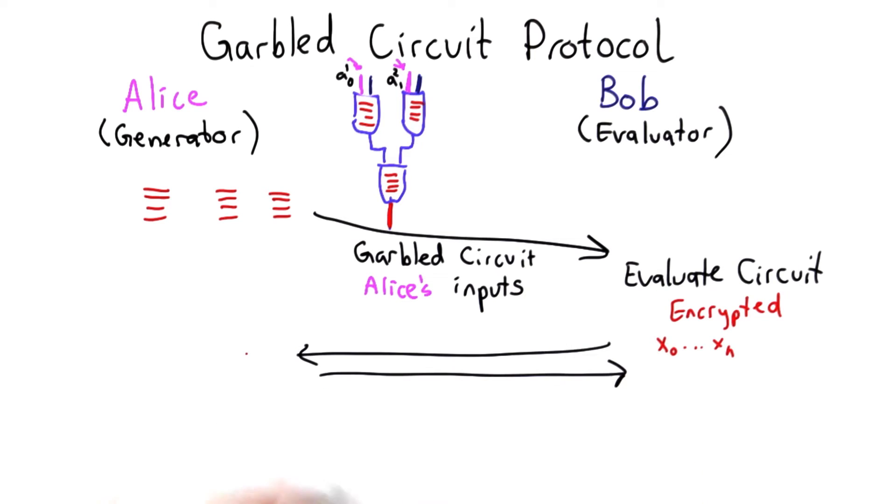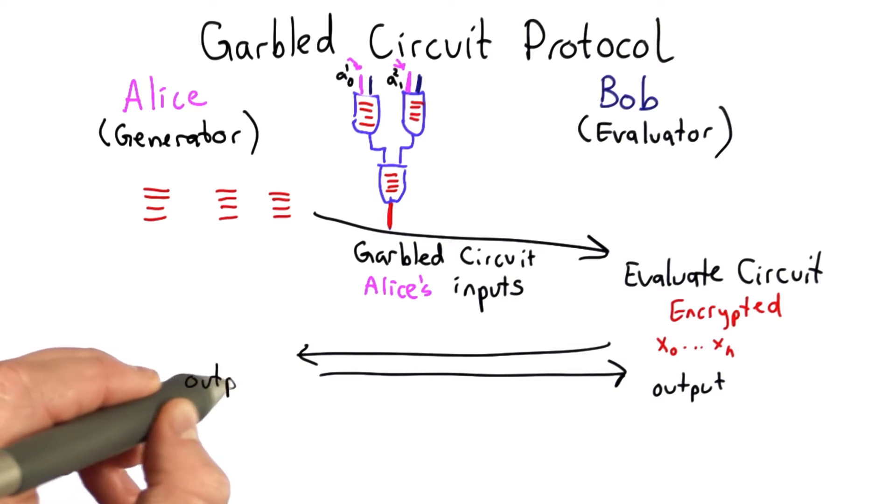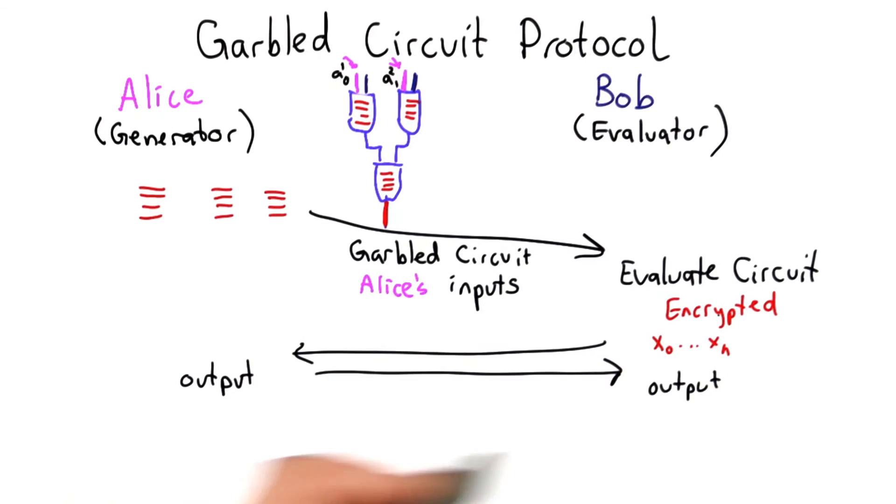And then they're going to do something to turn that into the semantic value, which possibly Bob receives, possibly Alice receives. We can design the protocol either way. And I'm not going to talk about that final step of how you turn the encrypted values at the end of the circuit into meaningful values. We'll leave that as a question for your exam.